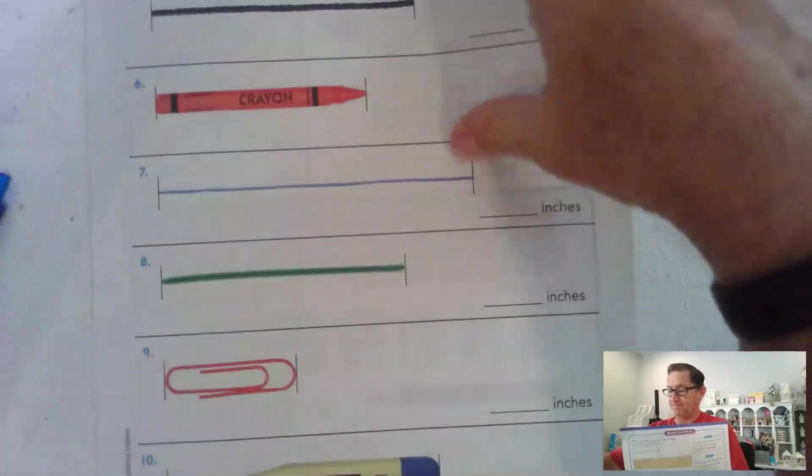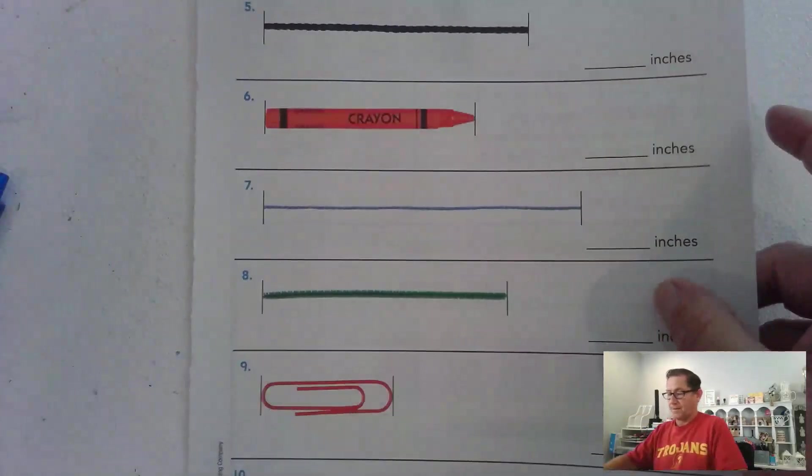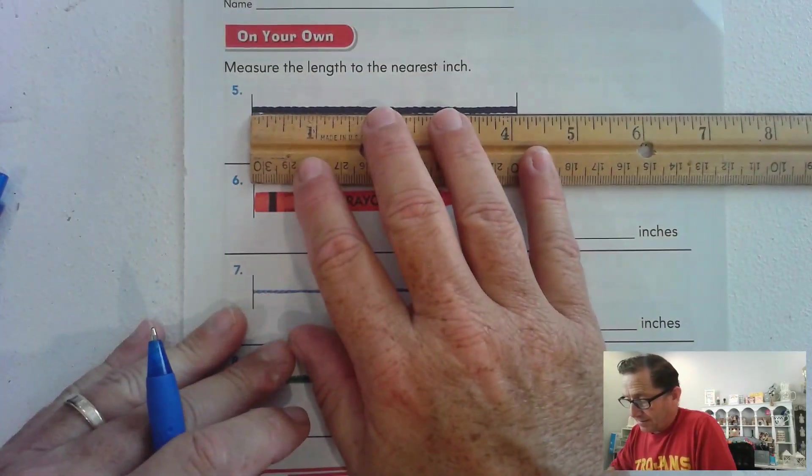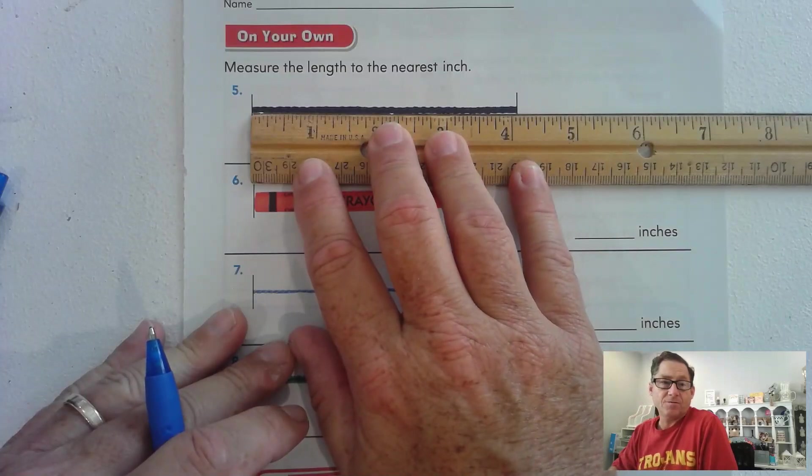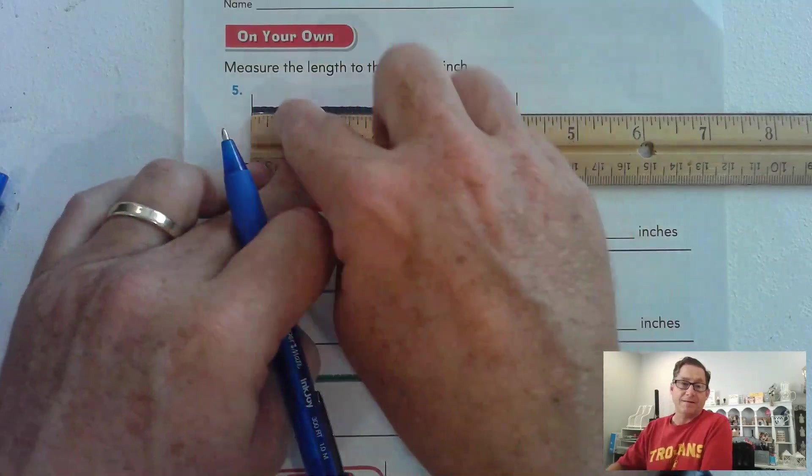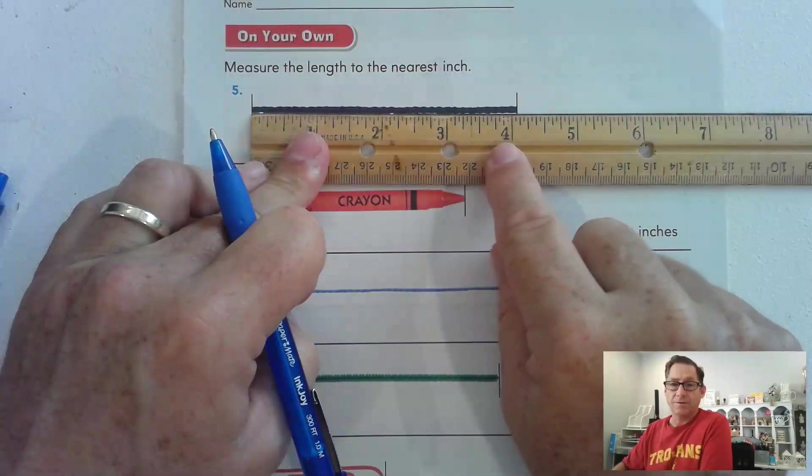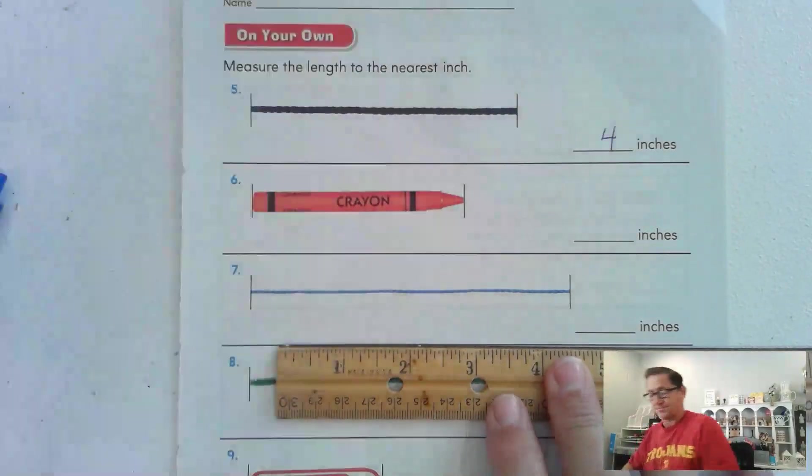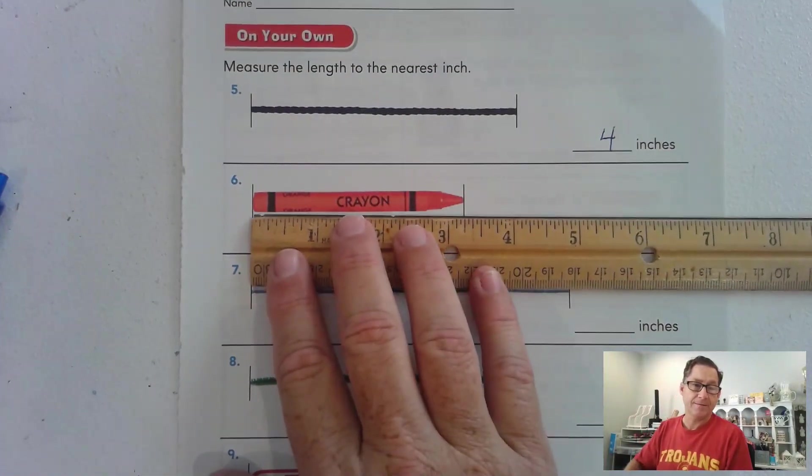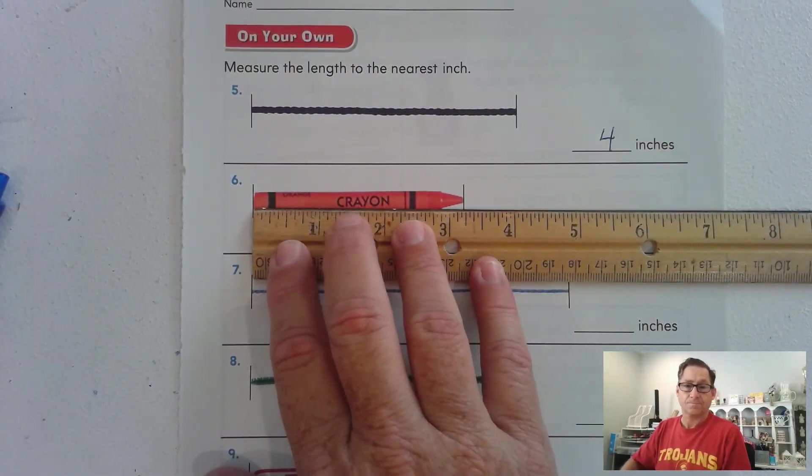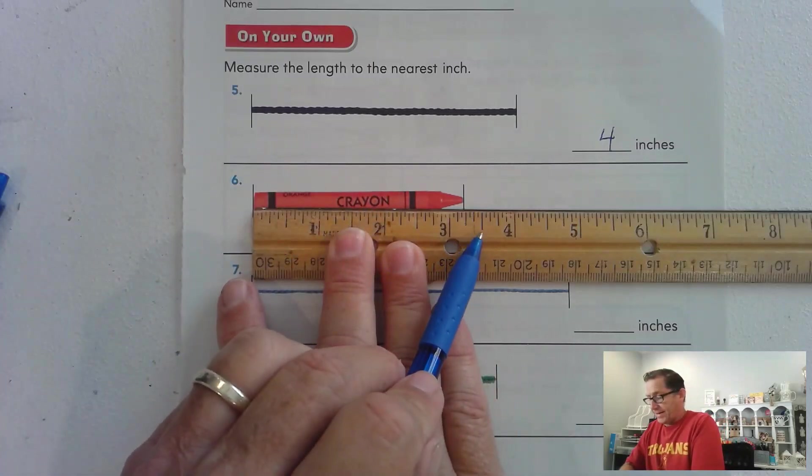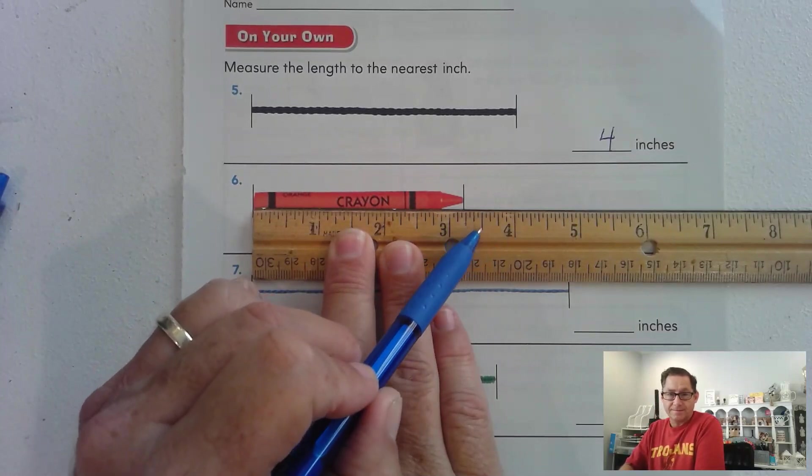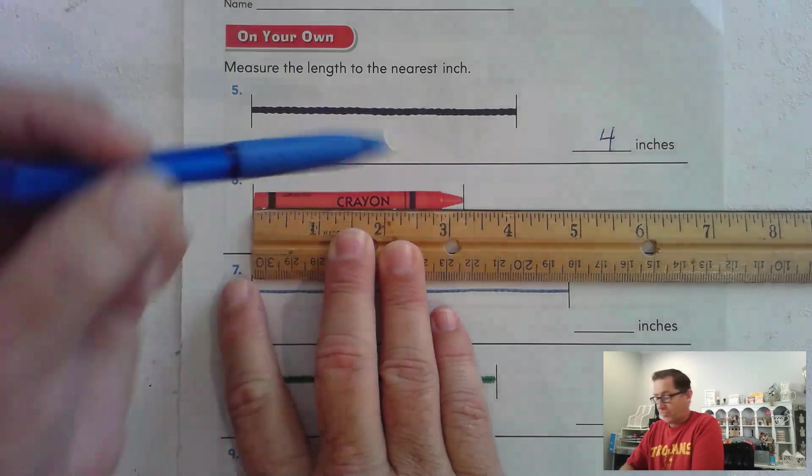Alright, 415. Measure the length to the nearest inch. So we're just going to keep doing what we've been doing. Line up the left-hand side of the string at zero on the ruler. And then see where it ends. It just passed the four. So it's four inches. The crayon hasn't reached the halfway mark between three and four. This is the halfway mark. So it's closer to three.